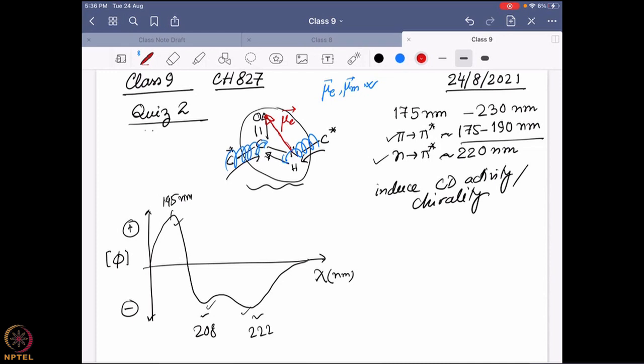However this blue line and this red line actually combine together and that is why this interaction of the n to pi star or pi to pi star they also become optically active. Because that is actually having some influence coming from this chirally active alpha carbon center and because they have a non-90 degree angle between them, so they become optically active and that is known as the induced chirality.